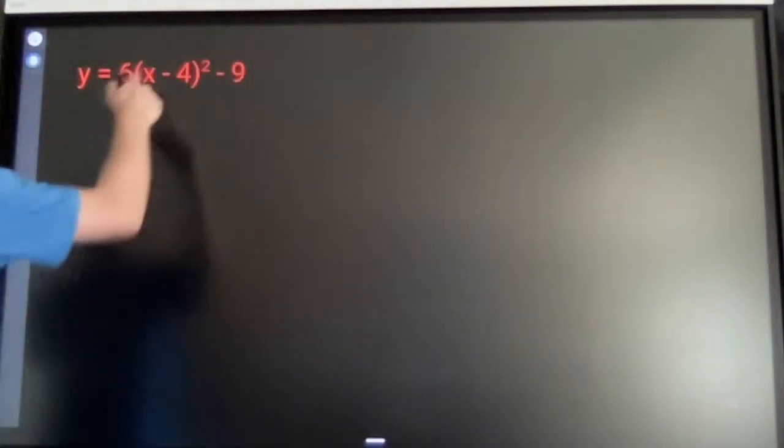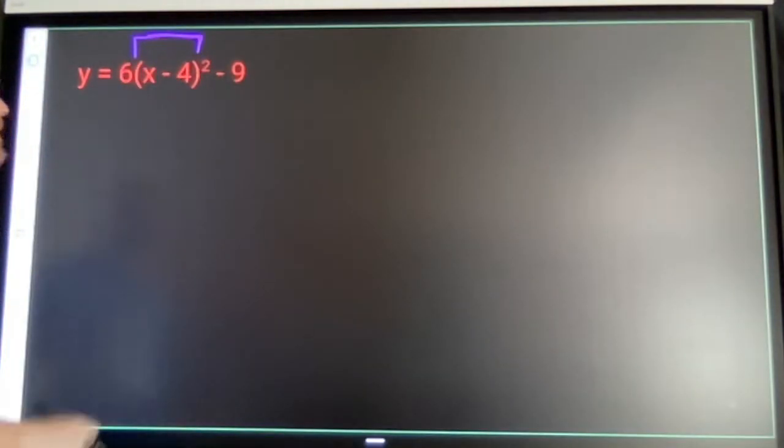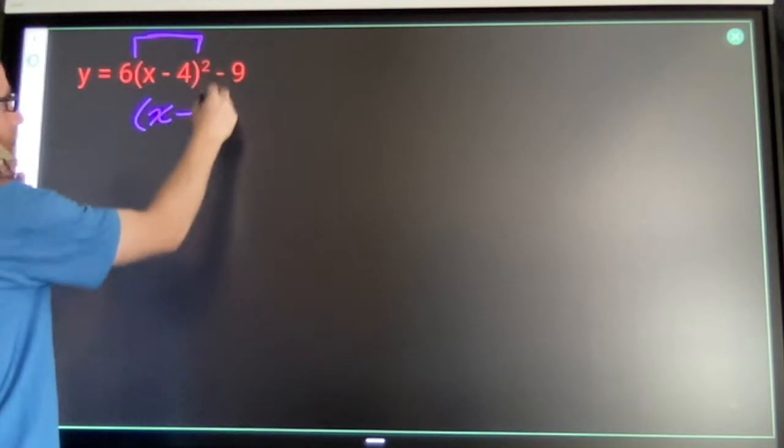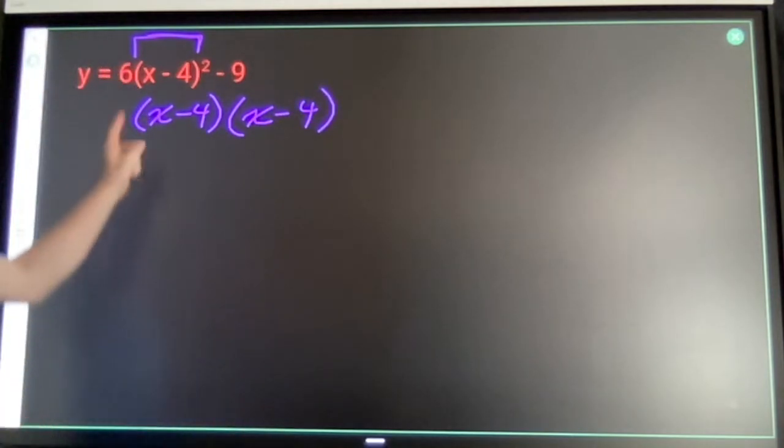So if I'm going to put this into standard form, I need to take care of these parentheses first, which means I'm doing x minus 4 times itself. If you don't remember how that works,